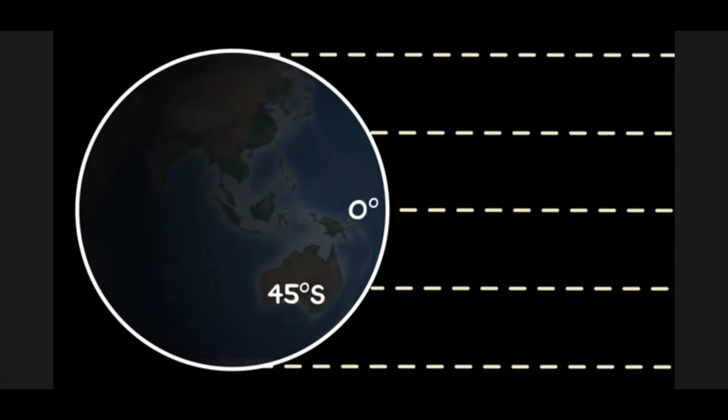So for example, at 45 degrees south, maximum solar radiation is received on mountain slopes at a 45 degree angle relative to the horizontal surface.